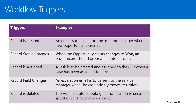There are five main ways a workflow is triggered. A workflow can be triggered on record creation — for example, an email sent to a queue could fire a workflow, or a new opportunity being created. When a record status changes — such as closing an opportunity or deactivating an account. When a record is assigned to another user. On any change to a field within that entity, where you can select specific fields to trigger workflows. And when a record is deleted.